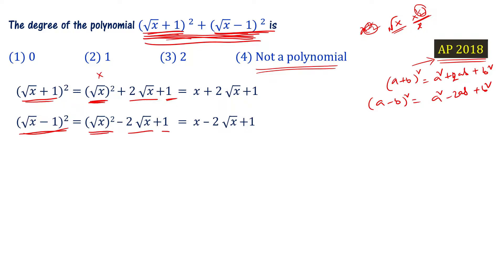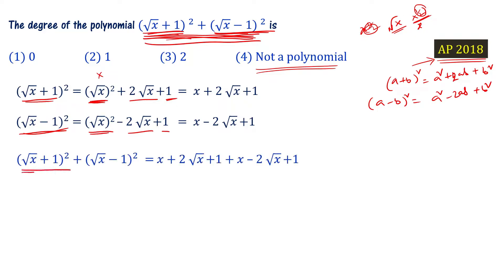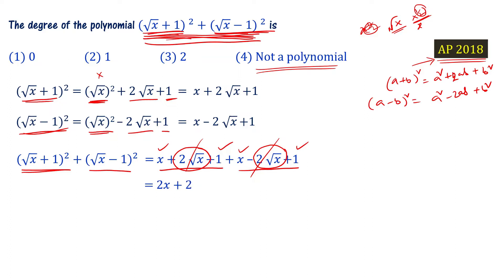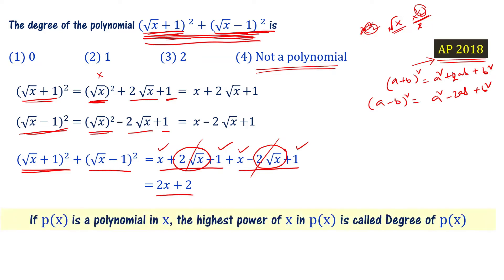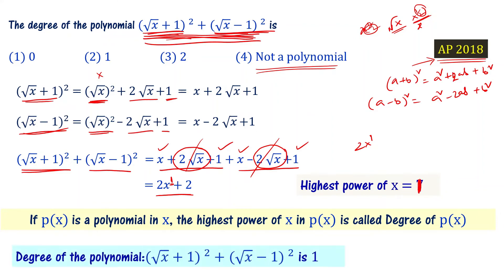Now combining both expansions: (x + 2√x + 1) + (x − 2√x + 1). The +2√x and −2√x cancel each other out. We are left with x + x + 1 + 1 = 2x + 2. The simplified polynomial is 2x + 2, and the highest power of x is 1, so the degree of the given polynomial is 1. Choice 2 is the answer.